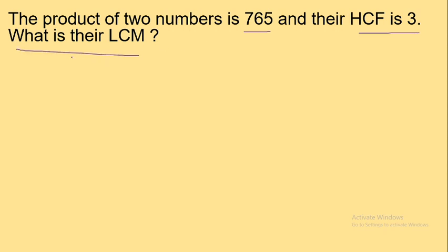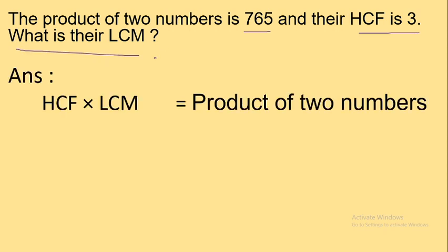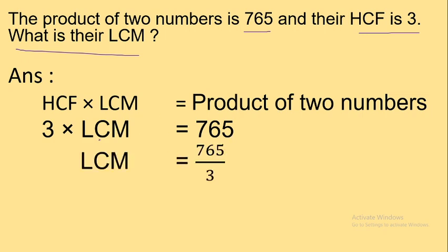HCF multiplied by LCM is equal to product of 2 numbers. So, 3 multiplied by LCM is equal to 765. Next step: LCM is equal to 765 divided by 3. If I divide 765 by 3, I will get 255. So, LCM is 255.